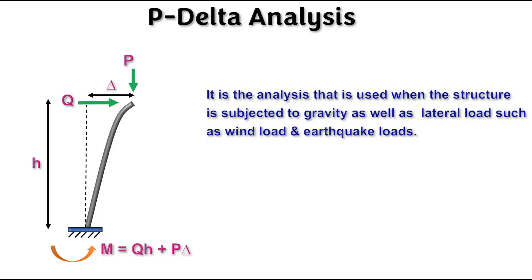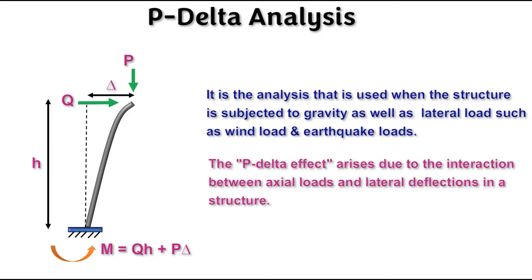P-delta analysis is used when a structure is subjected to gravity load as well as lateral loads such as wind load and earthquake loads. This P-delta effect arises due to the interaction between the axial load and lateral deflections in a structure. As you can see in this image, the structure is subjected to axial load as well as lateral load, and due to the lateral load it undergoes lateral deformation. This is the basic concept behind P-delta analysis.